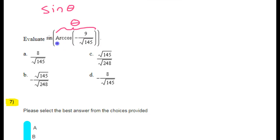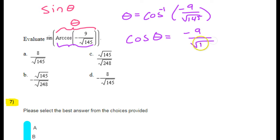For now, focus on the inside part. Arc cosine of this. So this tells us that theta is equal to the inverse cosine or arc cosine of negative 9 over radical 145. That means that cosine of this angle is equal to negative 9 over radical 145.